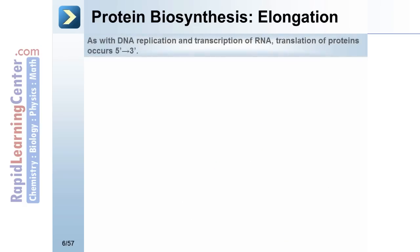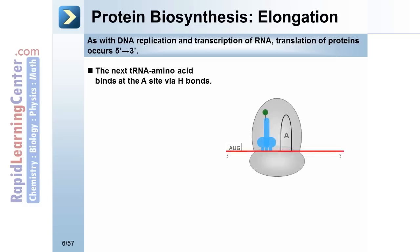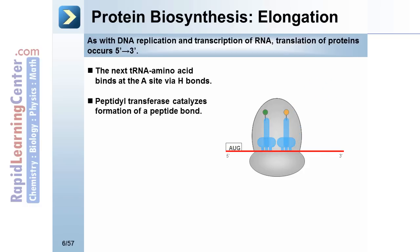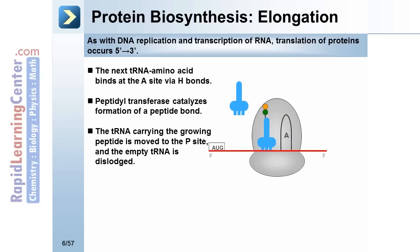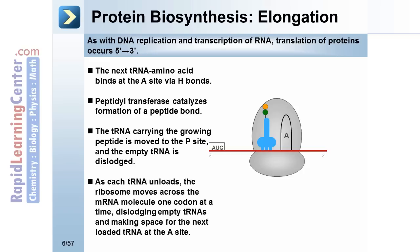Protein biosynthesis elongation. As with DNA replication and transcription of RNA, translation of proteins occurs in the 5' to 3' direction. The next tRNA amino acid binds at the A site via hydrogen bonds. Peptidyl transferase catalyzes formation of a peptide bond. The tRNA carrying the growing peptide is moved to the P site and the empty tRNA is dislodged. As each tRNA unloads, the ribosome moves across the mRNA molecule one codon, dislodging empty tRNAs and making space for the next loaded tRNA at the A site.